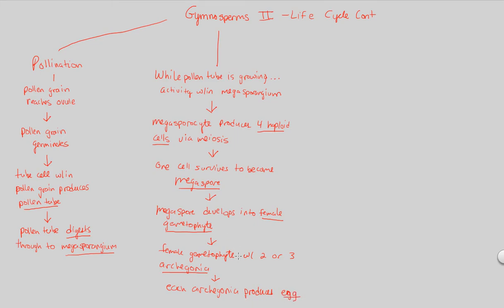We needed to get to the egg because we have a sperm cell trying to travel through the pollen tube into the megasporangium and eventually fertilize this egg. Notice how nothing about fertilization has been mentioned yet — pollination is definitely not fertilization. This developmental step on the female side is not fertilization. Fertilization is going to happen at the final point of our flowchart.